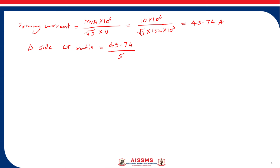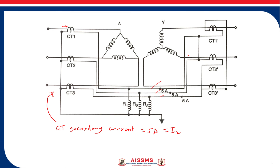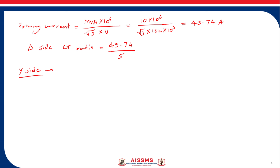That is the CT ratio on the delta side. Now on the star side of the power transformer, the CTs are connected in delta. Whatever current flows through the pilot wire, when it enters the delta circuit it becomes 5 divided by root 3. So the CT secondary current on the star side equals 5/√3 amperes.